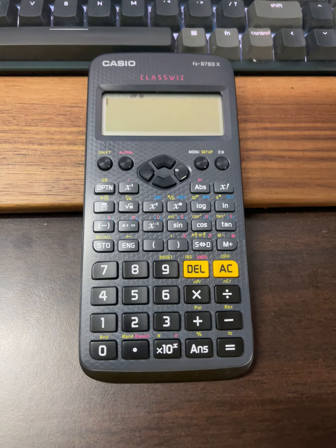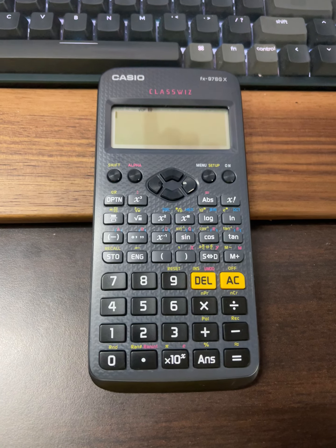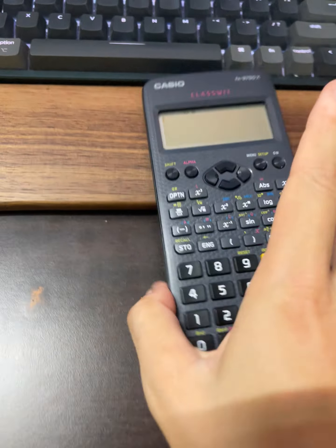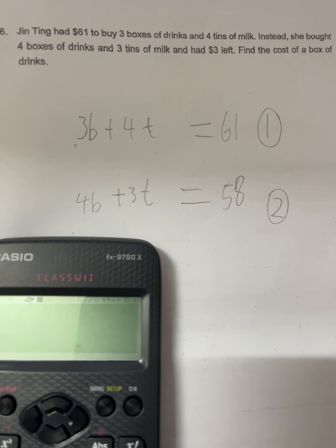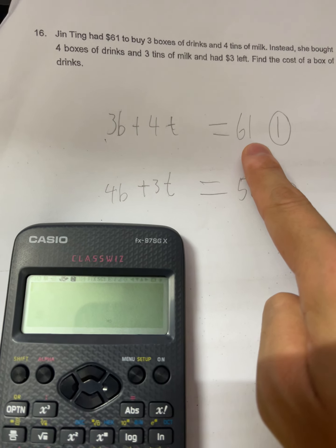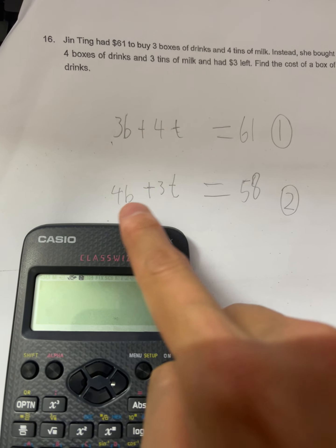Okay, so for this question, you have 3b + 44 equals 61, and you have 4b...